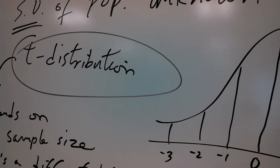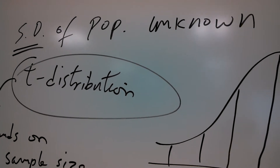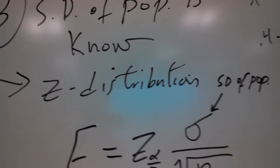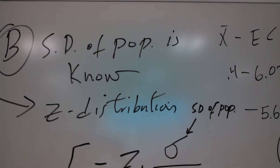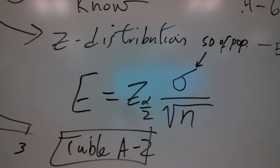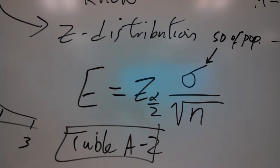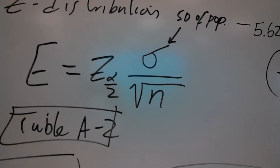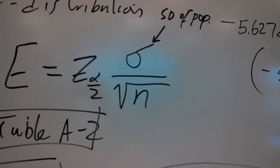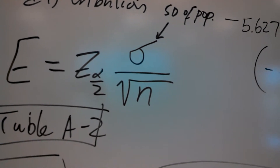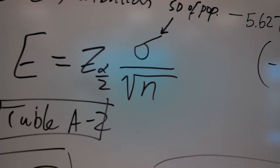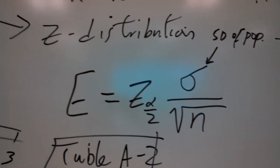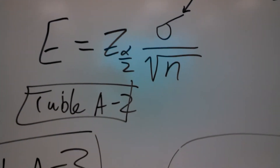If the standard deviation of the population is known, then you use a Z distribution instead of a T distribution. The formula for the margin of error becomes: E equals Z sub alpha over 2 times sigma divided by the square root of N. Here, sigma represents the standard deviation of the population, whereas S represents the standard deviation of the sample. In this case, you use the Z distribution table for your calculation.